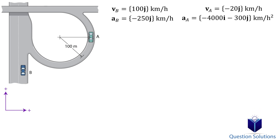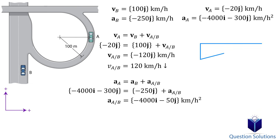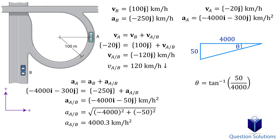We can now start applying the relative equations. We will start with velocity. The question says to determine the relative velocity of car A with respect to car B, so our equation will look like this. Let's plug in what we found and solve. Since there is only the j component, the magnitude is simply 120 kilometers per hour straight down. For acceleration, we will do the same — write our relative acceleration equation, plug in what we know, and solve. Let's draw the vector components and solve for the magnitude, then use tan inverse to find the angle. Those are our answers.